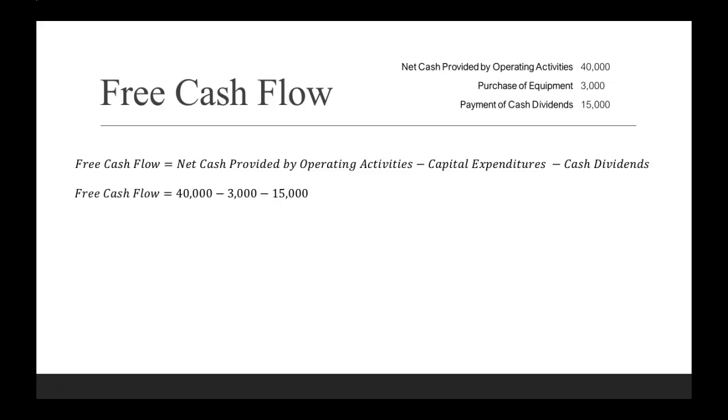So your free cash flow is $40,000 minus $3,000 minus $15,000, which comes out as a free cash flow of $22,000.